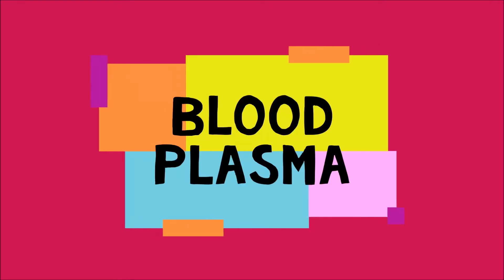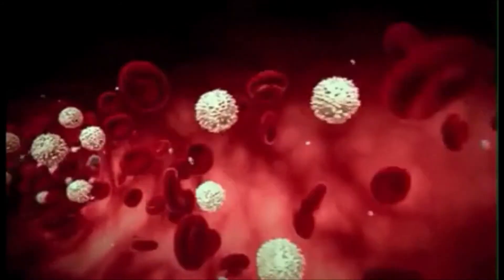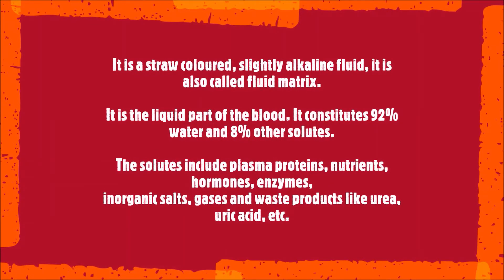Blood plasma is a straw-colored, slightly alkaline fluid, also called the fluid matrix. It is the liquid part of the blood which constitutes almost 92 percent water and 8 percent other solutes. The solutes include plasma proteins, nutrients, hormones, enzymes, inorganic salts, gases, and other waste products like urea and uric acid.